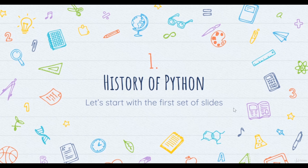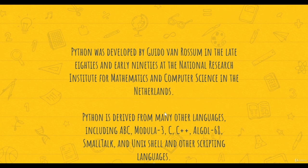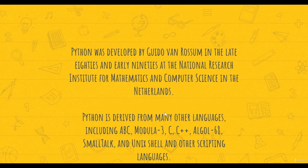Python was developed by Guido van Rossum in the late eighties or early nineties at the National Research Institute for Mathematics and Computer Science. It is derived from many other languages including C and C++. Python source code is available under the GNU General Public License. Python is now maintained by a core development team, although Guido van Rossum still holds a vital role in directing its progress.